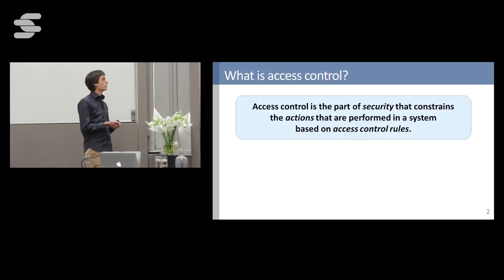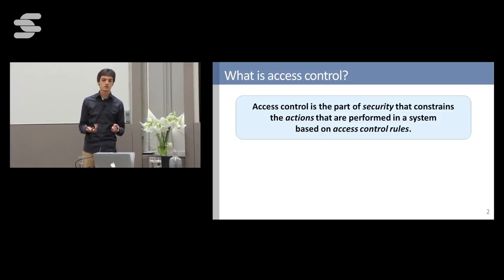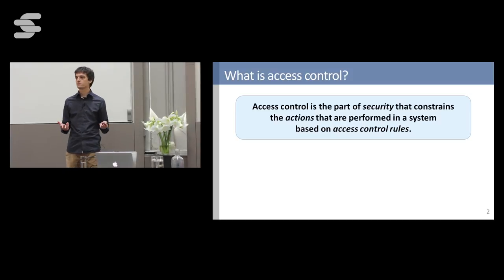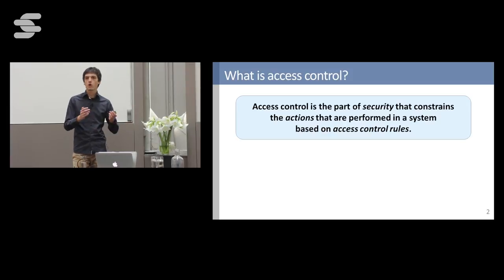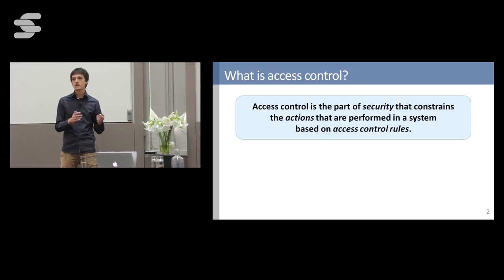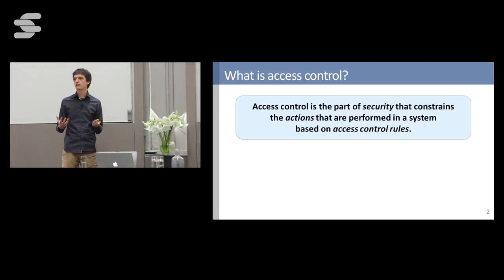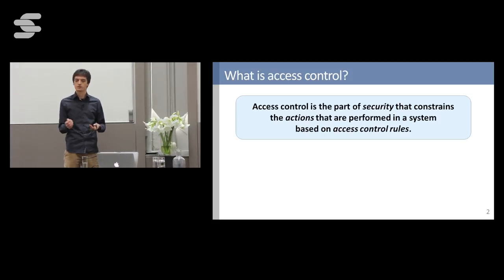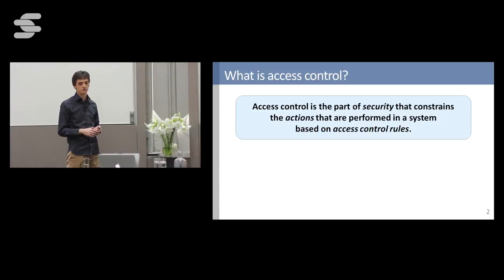So, what is access control? Access control is a part of security that constrains the actions performed in a system based on access control rules. These rules can be almost anything — for example, Bob can read a certain file and he cannot read another file — up to very application-specific and elaborate rules, like a bank clerk can only access accounts of people associated with their office. So, more complex and more application-specific.